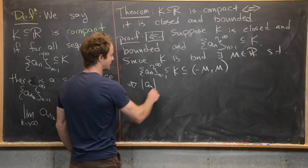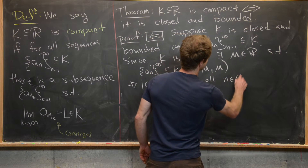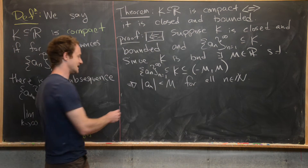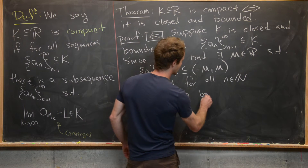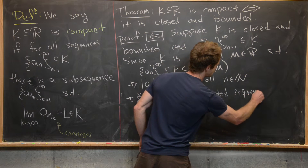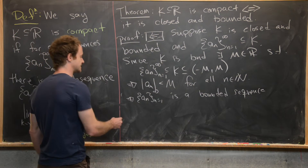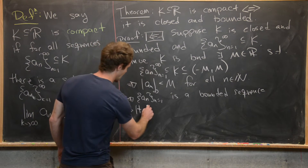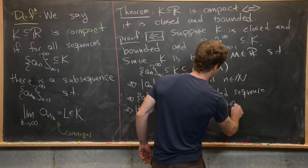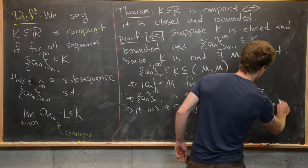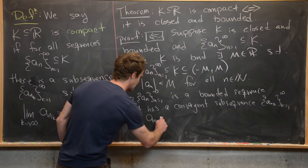Since the sequence was also a subset of K, it's also a subset of (−M, M), which means |a_n| < M for all natural numbers n. That tells us the sequence a_n is a bounded sequence. We earlier proved that every bounded sequence has a convergent subsequence — so it has a convergent subsequence, which we'll call a_{n_k} for k running from 1 to infinity.